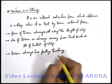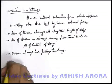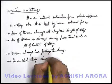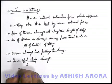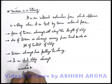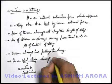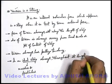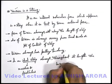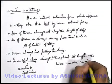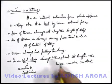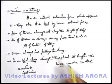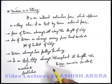Using tension you can always pull an object; you can never use a string to push any object. Similarly, in an ideal string — and ideal we generally consider a string which is massless and frictionless — in an ideal string, throughout its length the tension remains constant. The force of tension never changes if the string is ideal; throughout its length the tension remains constant. Let us see some cases where we apply tension in different types of strings and blocks which are in contact with the string through pulleys etc.